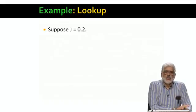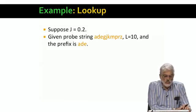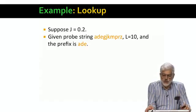Okay, so let's take an example of a lookup. We'll assume J, the upper limit on Jaccard distance is 0.2. And here's our probe string. Its length is 10.